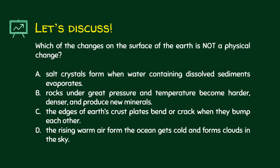Which of the changes on the surface of the earth is not a physical change? Letter A: salt crystals form when water containing dissolved sediments evaporate — that is physical. Letter B: rocks under great pressure and temperature become harder, denser, and produce new minerals — the key word is 'produce new minerals,' which is an indicator of a chemical change. The answer is letter B.